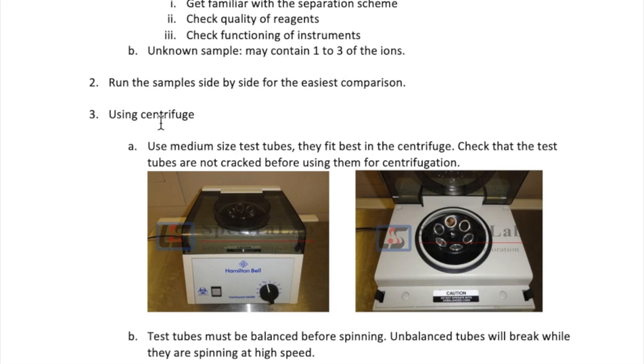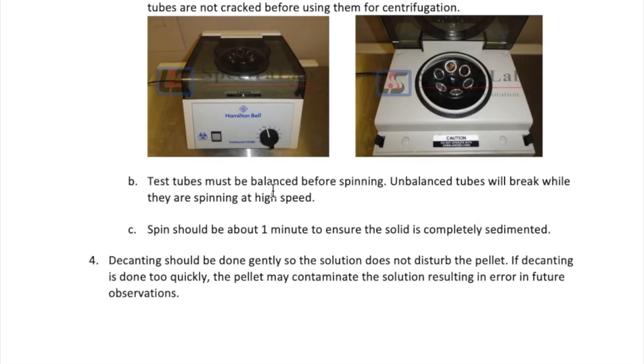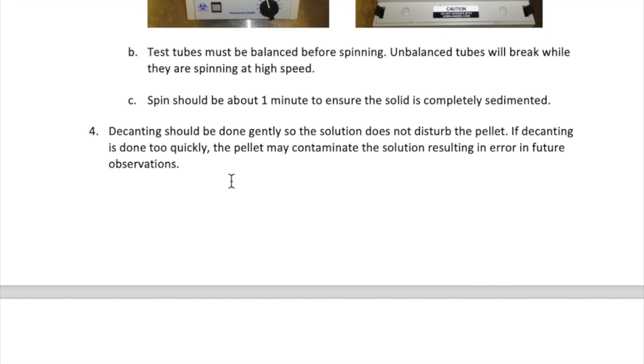Alright, now let's talk about some guidelines for using the centrifuge. First, use medium sized test tubes. These fit the best in the centrifuge. Check that the test tubes are not cracked on the bottom or the side before you put them in the centrifuge. In addition, make sure each test tube is balanced with another right opposite it in the centrifuge. Unbalanced or cracked test tubes will break at the high speed spin of the centrifuge. Spin for about a minute to ensure that all your solid is completely sedimented to the bottom of the test tube. You should decant gently so as not to disturb the pellet at the bottom of the tube. If some of the pellet gets carried to the tube that is only supposed to have solution, you now have a contaminating ion which will complicate your observations and may lead you to the wrong conclusion.